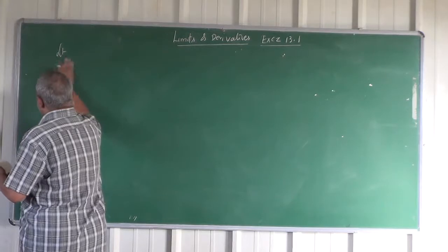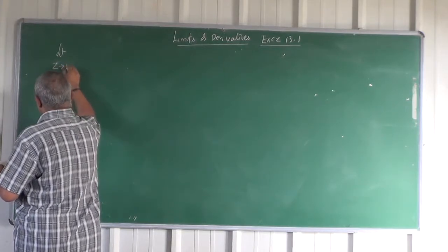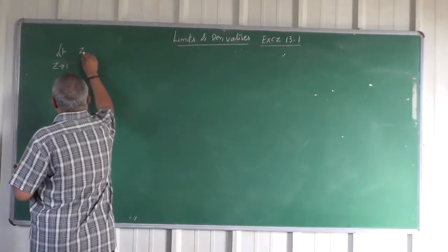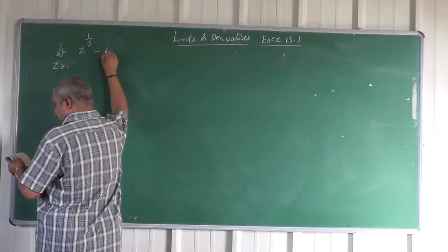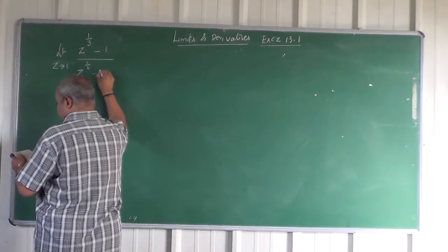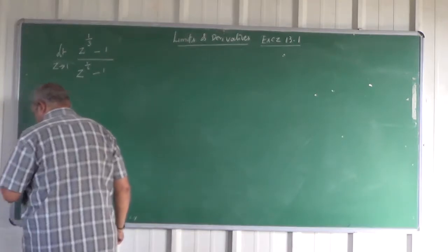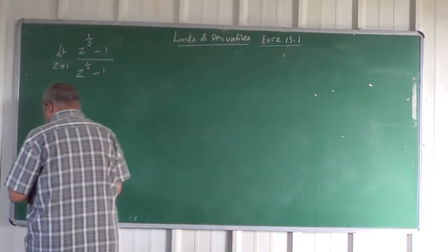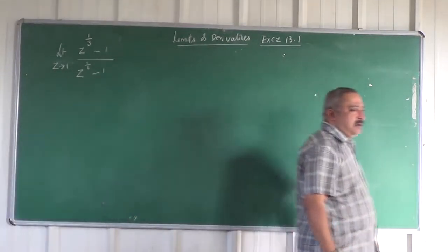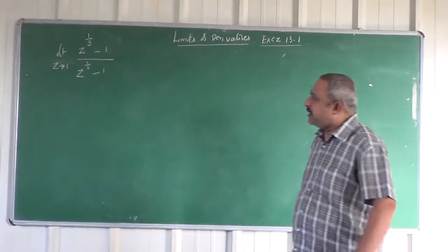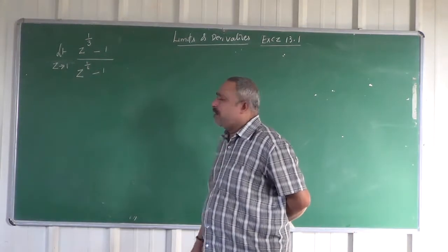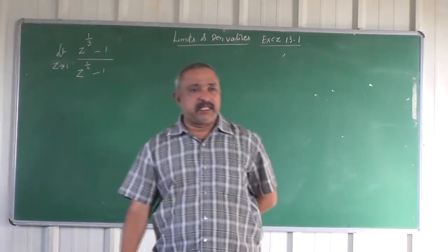The problem is limit Z tending to 1, Z to the power of 1 by 3 minus 1 divided by Z to the power of 1 by 6 minus 1.